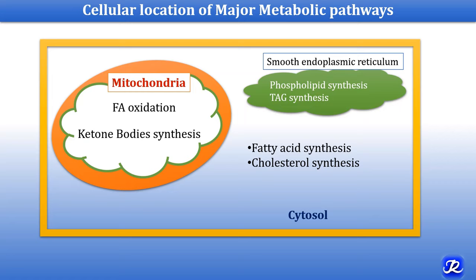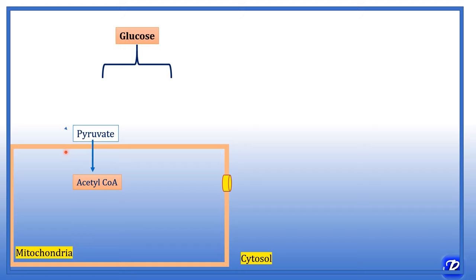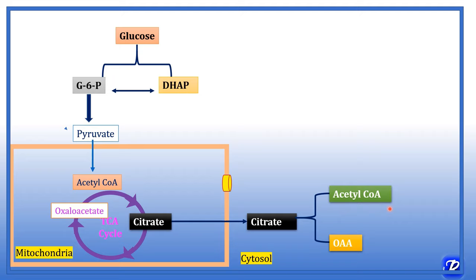Now let's understand various major metabolic pathways with this schematic representation. This is a cell; this is cytosol; this is mitochondria. Acetyl-CoA is derived from pyruvate by the action of pyruvate dehydrogenase, which is the end product of glycolysis. The first fate of acetyl-CoA is the TCA cycle, and the second fate is synthesis of fatty acids. However, acetyl-CoA cannot cross the mitochondrial membrane, so it combines with oxaloacetate to form citrate. This citrate can cross the mitochondrial membrane, comes into the cytosol, and is broken down to form acetyl-CoA and oxaloacetate, and this acetyl-CoA is involved in fatty acid synthesis.